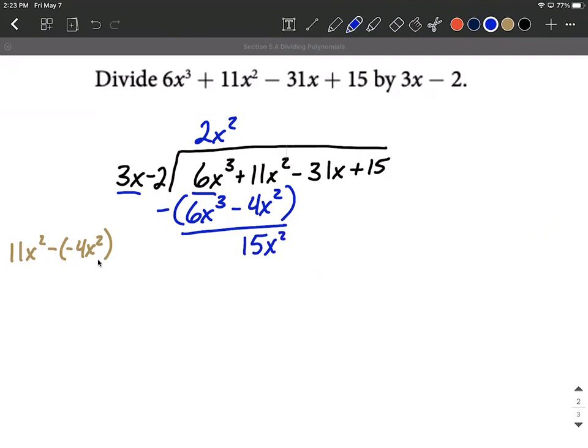All right with that process complete we're going to bring down the next term. So minus 31x and then start the process again. So we want to focus on the first terms. 3x multiplied by what makes 15x squared. Well 3 times 5 makes 15, x times x is going to make the x squared.